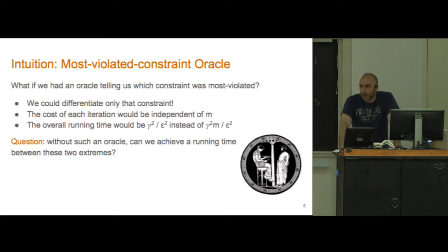Now all of a sudden the m dependence is gone from the runtime of our algorithm. At each iteration we're only checking one constraint, the one that we know is the most violated. Of course in reality we don't just know which constraint is the most violated.